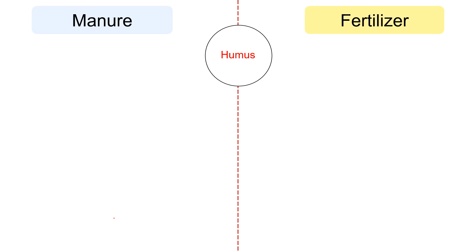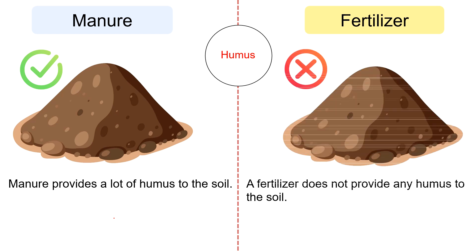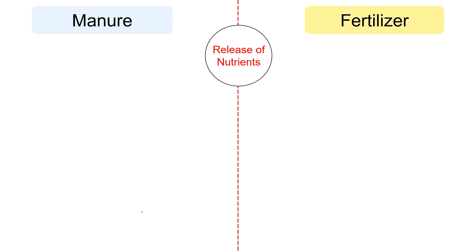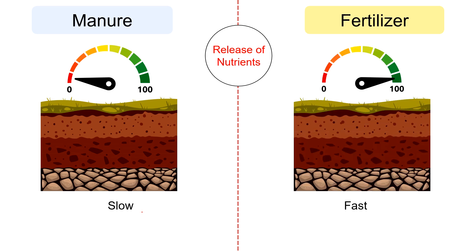In terms of humus, manure provides a lot of humus to the soil, whereas a fertilizer does not provide any humus to the soil. Regarding release of nutrients, the nutrients in manure are released slowly as the organic matter breaks down through microbial activity in the soil — this gradual release provides a more sustained supply of nutrients to the plants. As against, fertilizers often provide a quicker release of nutrients as they are typically water-soluble, which can be advantageous for addressing immediate nutrient deficiencies in plants.